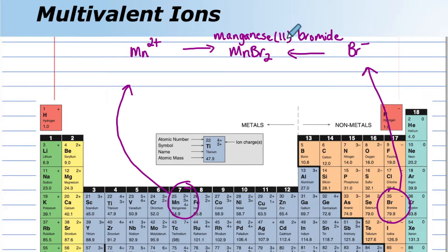Because we're using the 2+ version of the manganese. Now if the 3+ version was used with bromide, the formula would change. We'd need a subscript of 3 and the name would change as well. We would still have manganese.